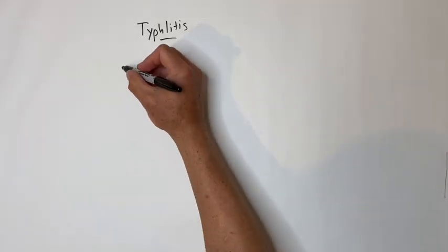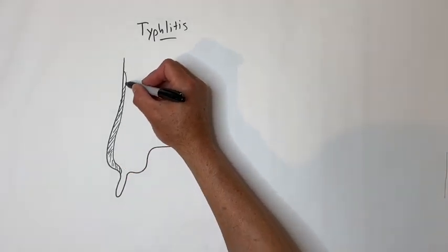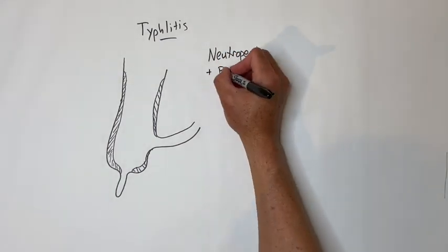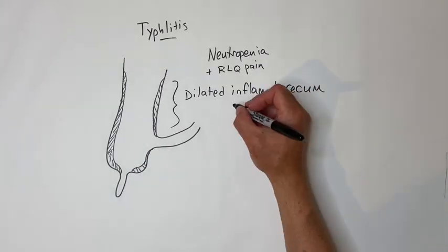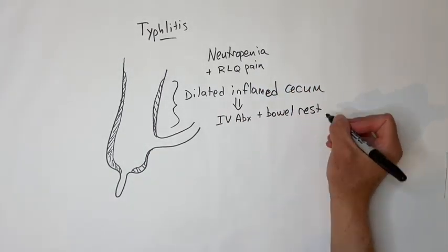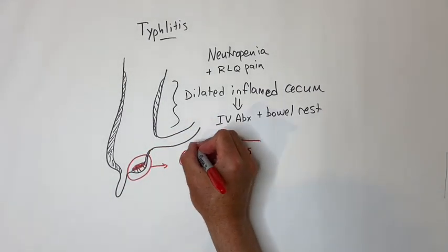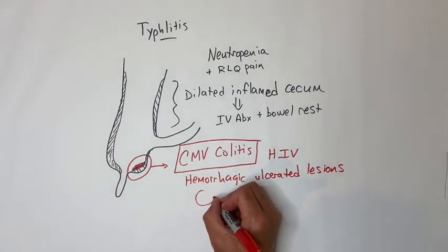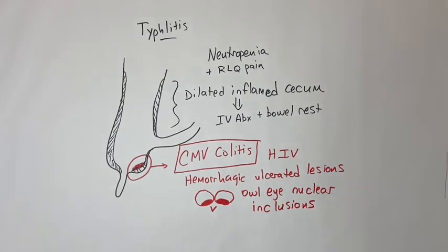Typhlitis is inflammation of the cecum related to neutropenia. The classic presentation is a neutropenic patient with right lower quadrant pain and a dilated inflamed cecum on CT scan. You must operate if the patient is septic or has free air, but most typhlitis is treated with IV antibiotics and bowel rest. Patients with HIV can also get CMV colitis of the right colon with hemorrhagic ulcerated lesions of the mucosa. The pathognomonic finding is owl-eyed nuclear inclusions in colonocytes on endoscopic biopsy.